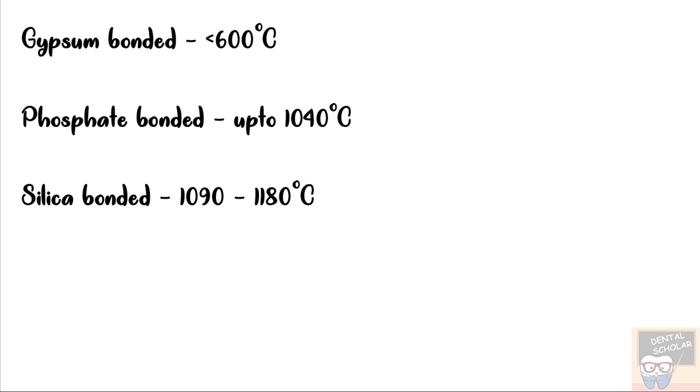So low fusing alloys may be casted with gypsum bonded investment material, while high fusing alloys require phosphate bonded investment material or silica bonded investment material depending on their melting range. So the correct answer is melting range of the alloy.